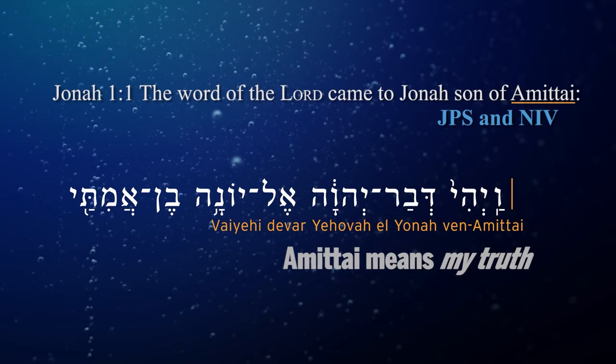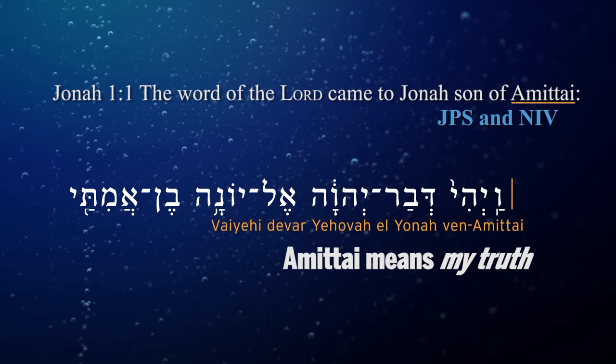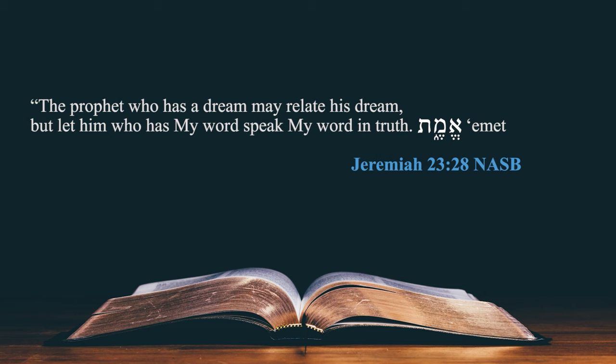What's interesting is the meaning of the name Amittai — Jonah's father's name. You won't see this in English. The meaning of the name Amittai is 'my truth.' Jeremiah chapter 23, verse 28 says: 'Let him who has my word speak my word in truth' — the root word emet. Rabbi Eliezer Ben Yehuda says Hebrew names are like gunpowder. So we have: Jonah, the dove, son of Amittai, my truth — pretty interesting.